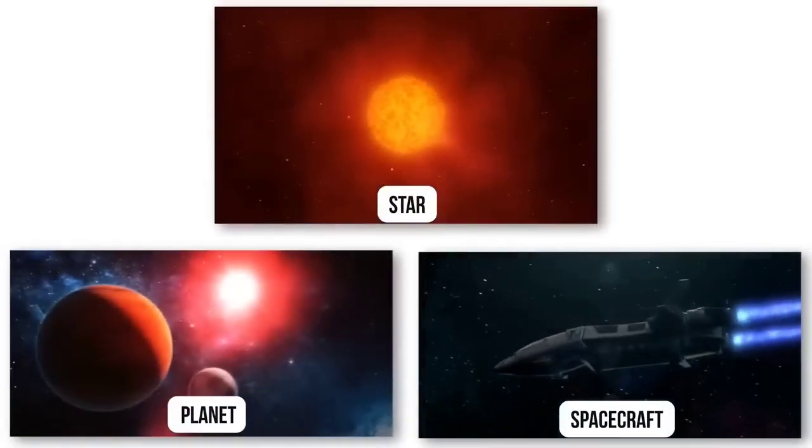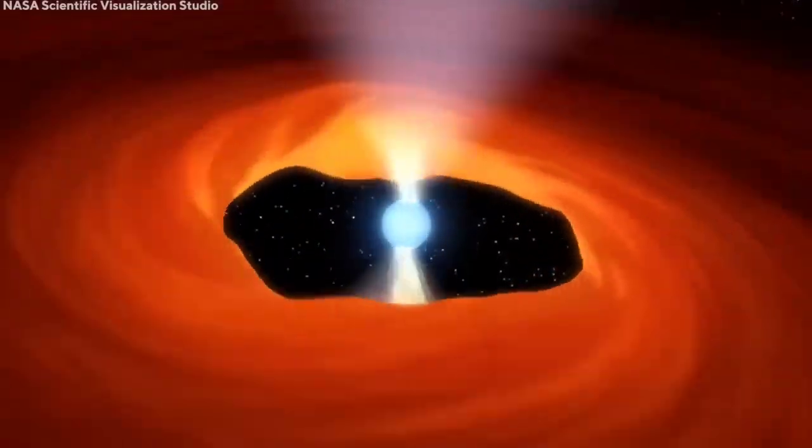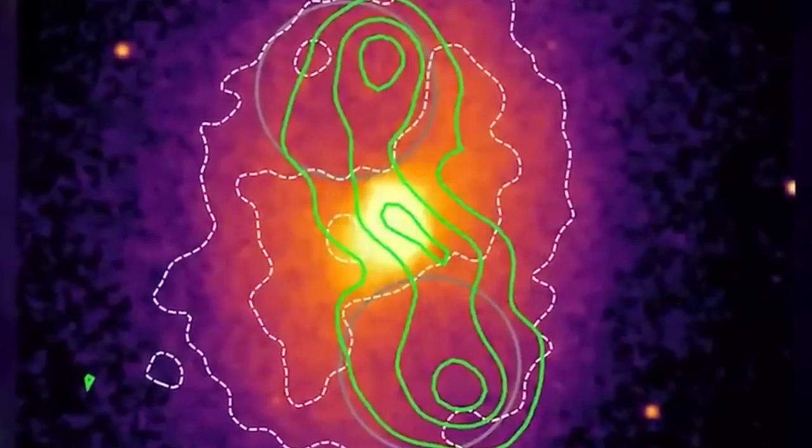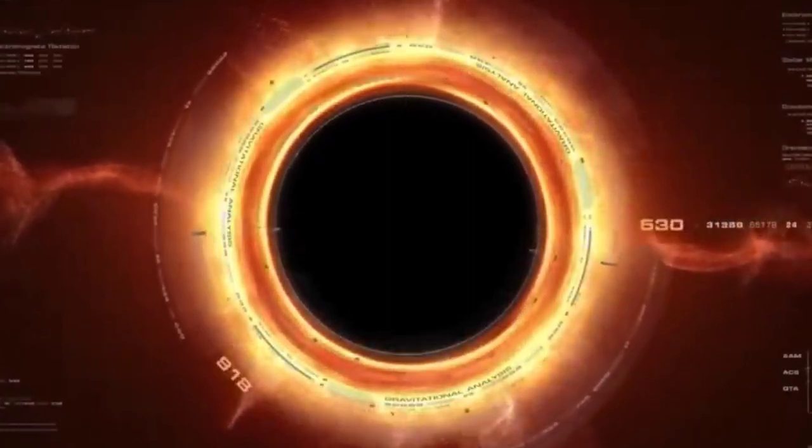According to current scientific theories, black holes form when a star collapses in on itself. This causes an incredibly dense point of matter to form with gravity so strong that nothing, not even light, can escape from it.